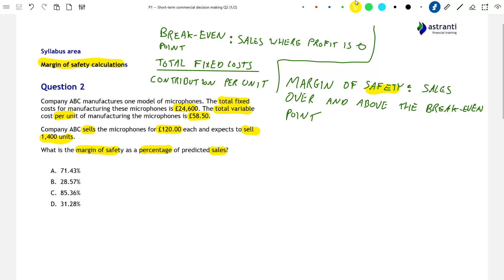So when we say safety in this context, we mean how far away is the company from making a loss or making a profit of zero. So the more sales the company has over and above the break-even point, the greater the margin of safety. The more sales would have to fall or costs would have to increase before the company is no longer making a positive profit.